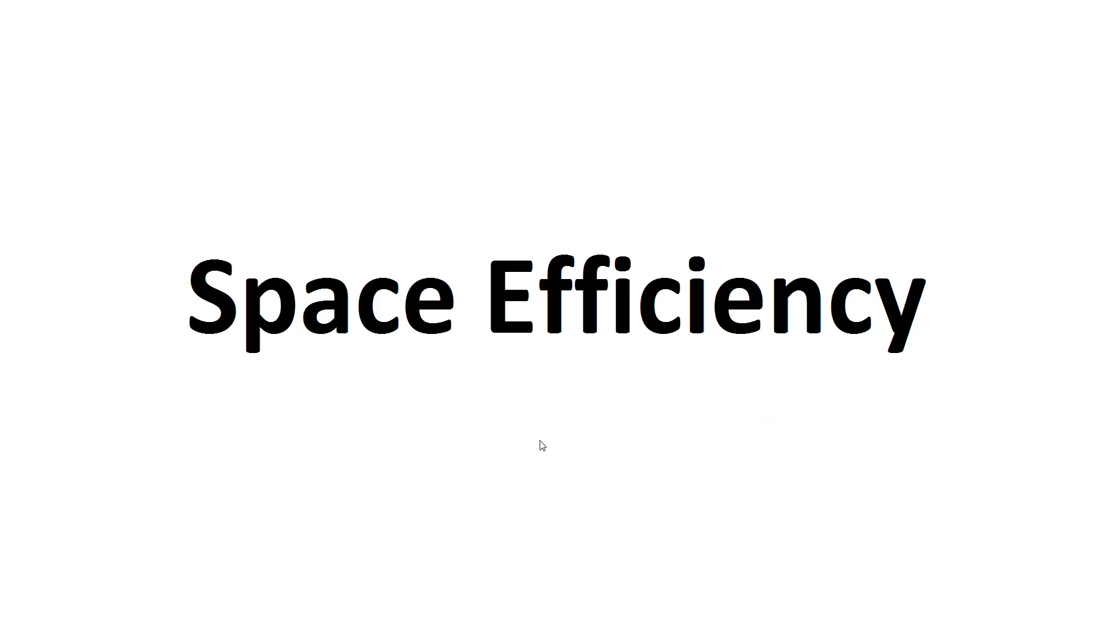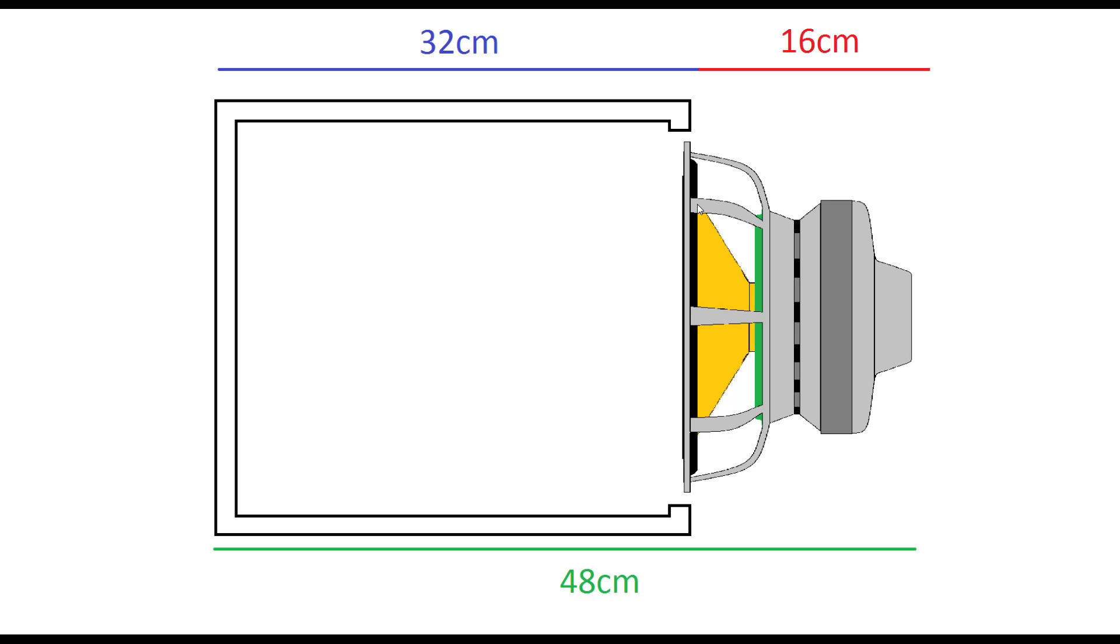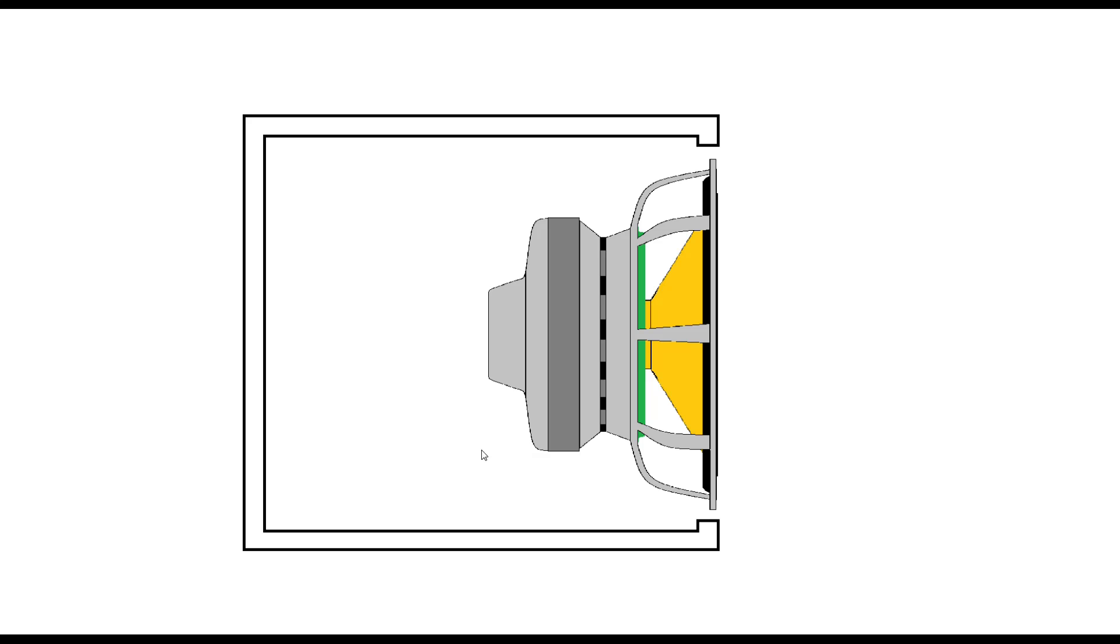Now the next thing is space efficiency. An inverse mounted sub just naturally has a larger footprint. 32 centimeters for the enclosure, 16 centimeters for the driver itself leads to 48 centimeters total. Now comparing that to the standard enclosure we have the same amount of speaker enclosure volume and even less of a footprint because the driver magnet system is inside the enclosure so it ends up having a 30 percent smaller footprint which is excellent for space saving.